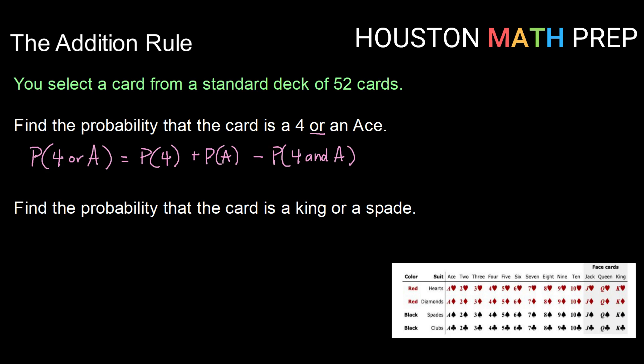So this part is going to be 0. That tells me that drawing a 4 and drawing an Ace are mutually exclusive events. My probability here will be 4/52 for drawing a 4, plus 4/52 for drawing an Ace, minus 0/52 for drawing a card that is both. So my overall probability is 8 out of 52.